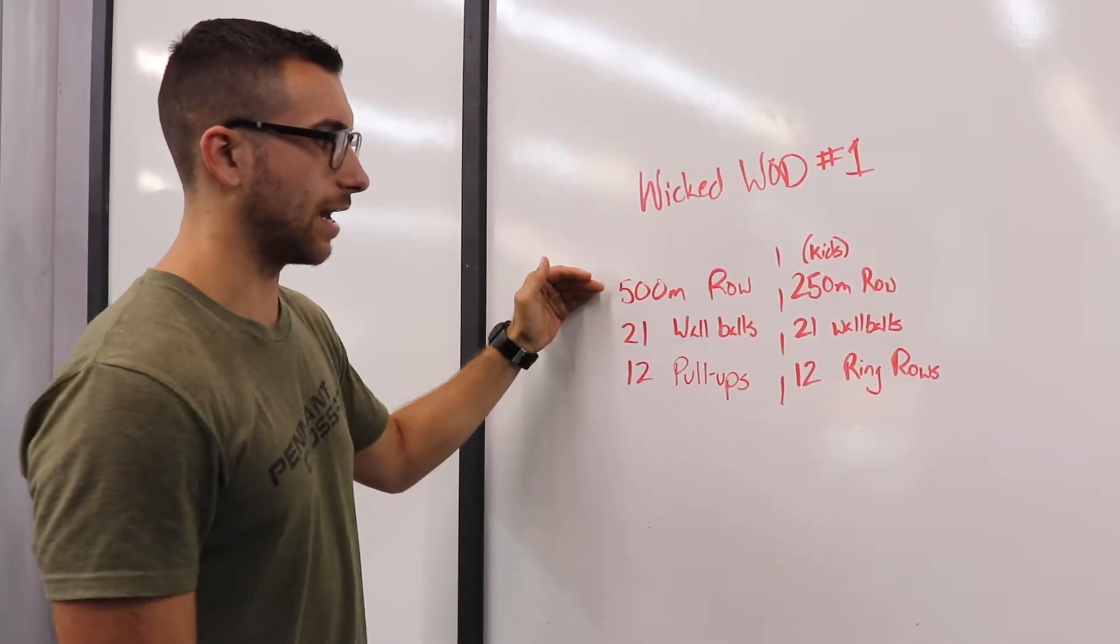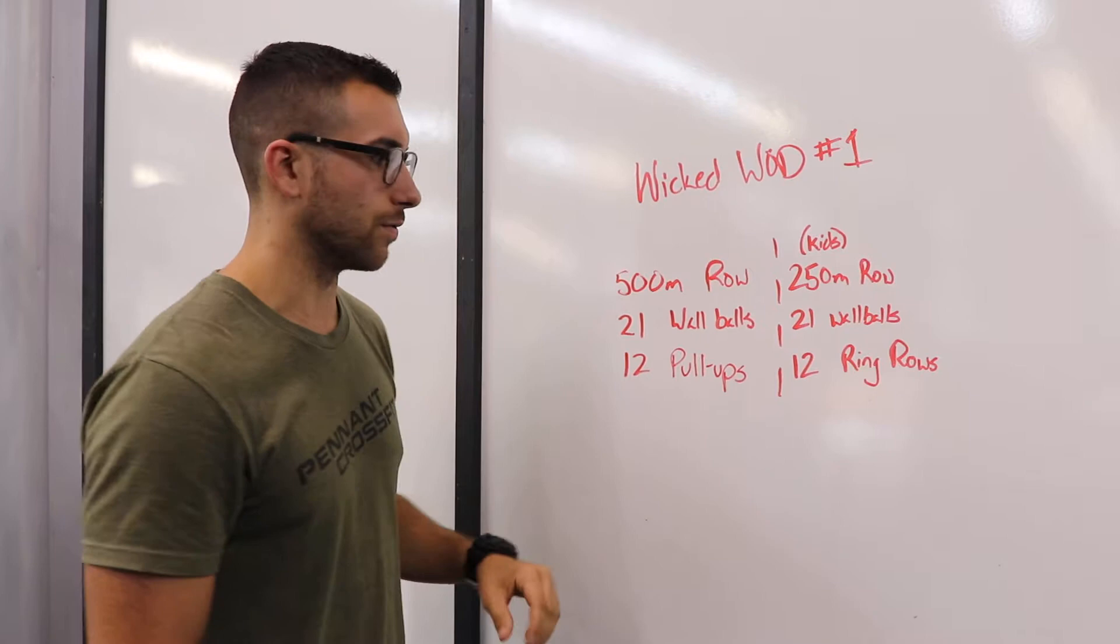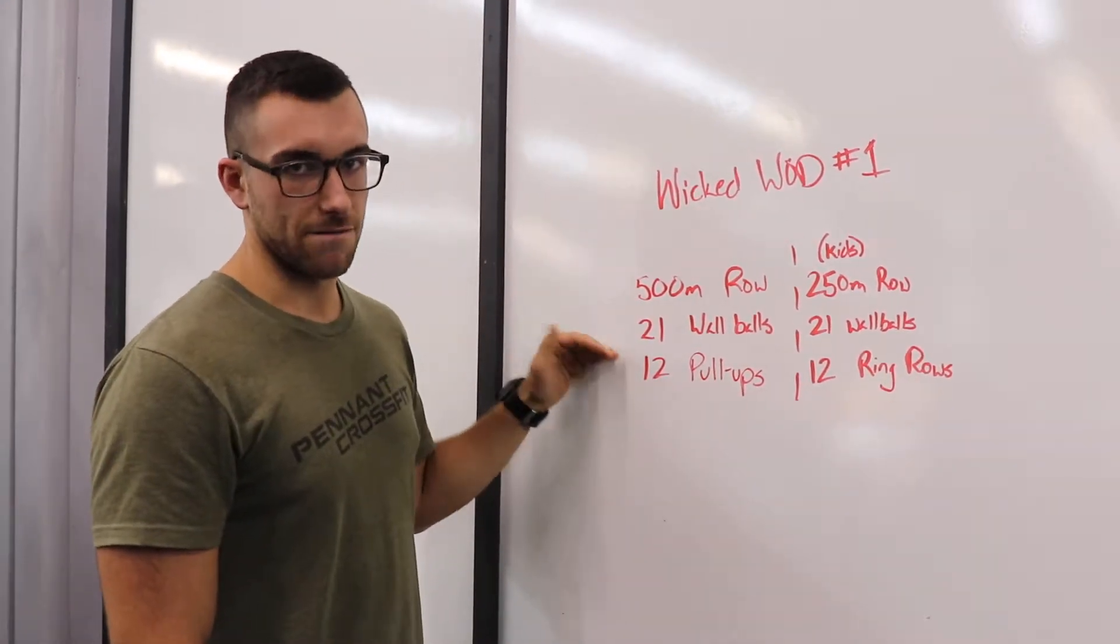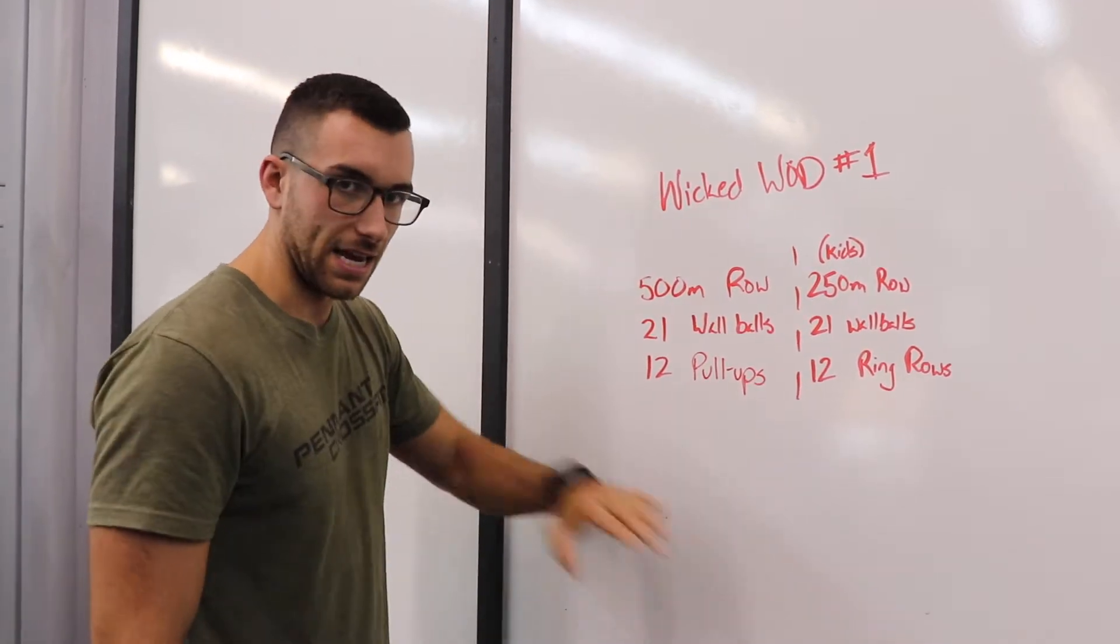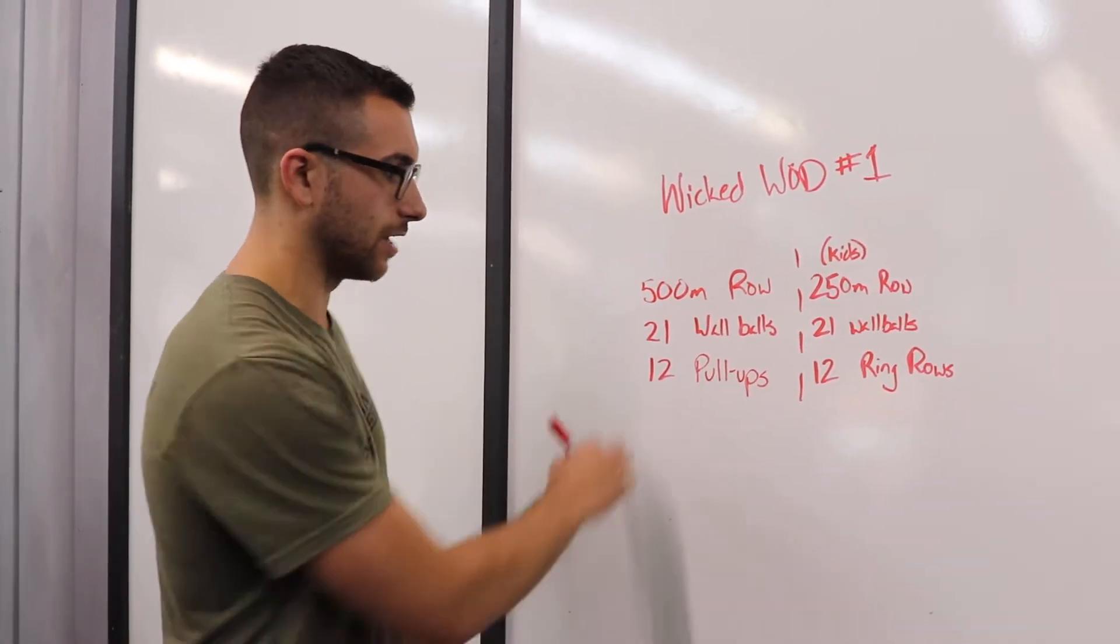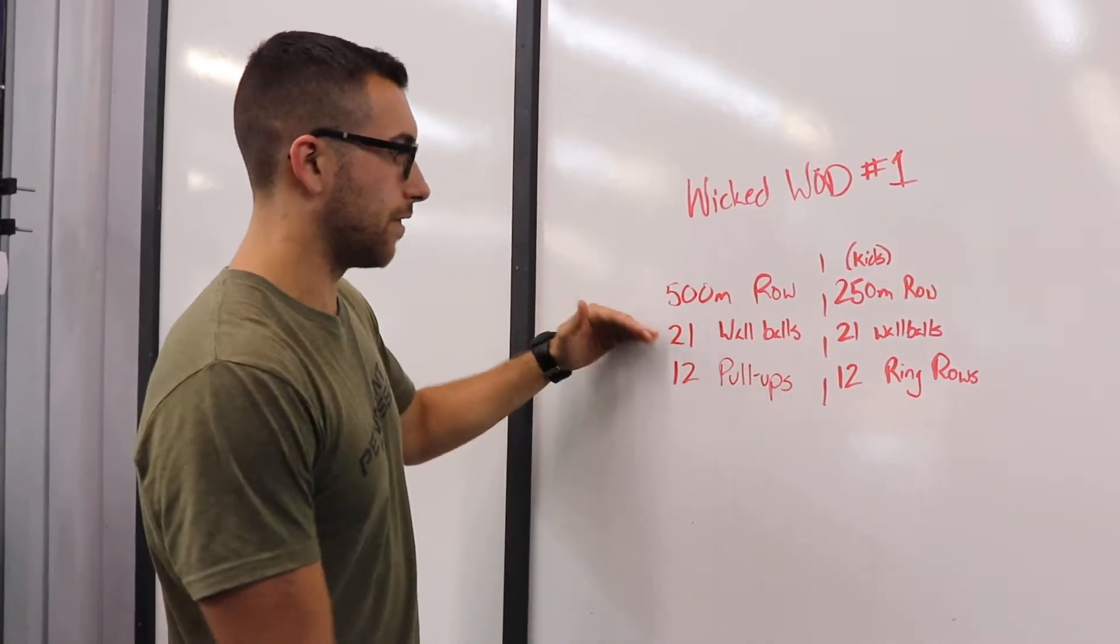Once again, you can't move on until that first partner is done. Once that first partner is done, they are done—that's it. It's an all-out sprint to the end. They're done with their 12 pull-ups, they can collapse on the floor.